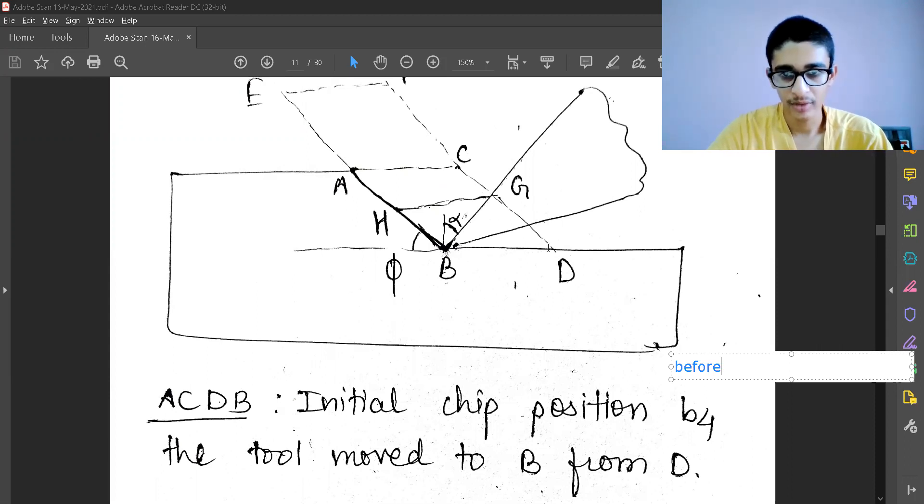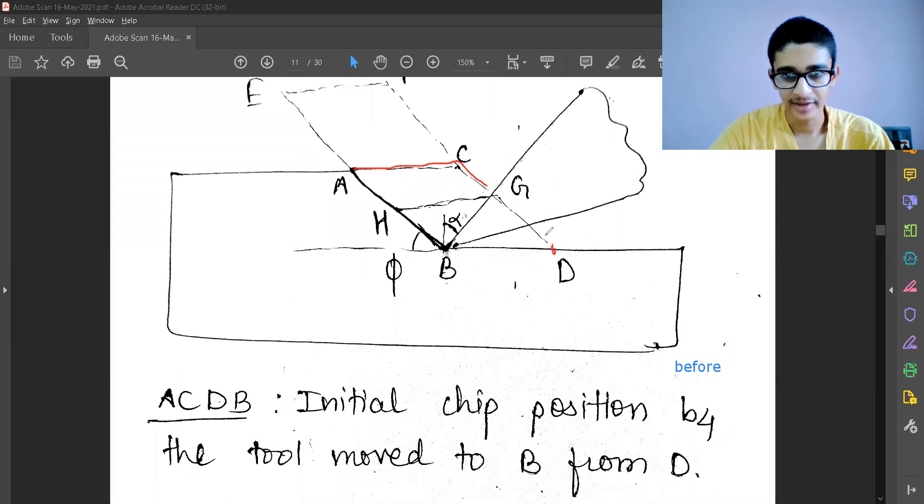It was at D, and this was my chip. When my tool was at position D, my chip was looking like this.